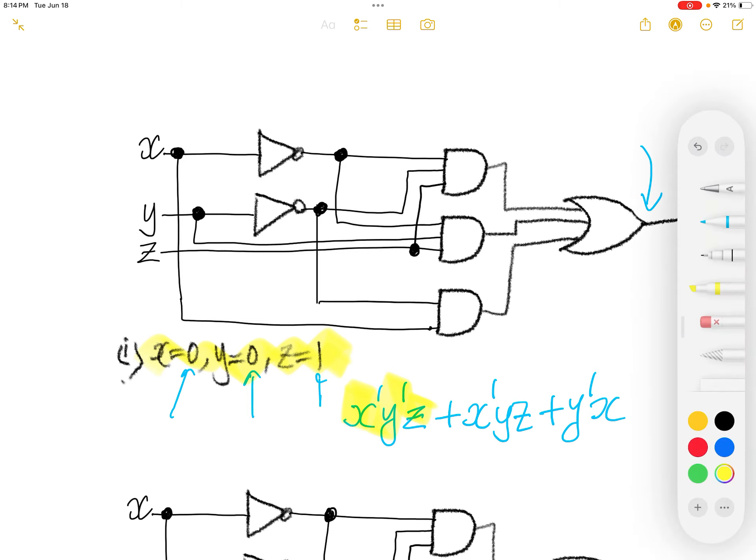And notice that this is an OR gate. OR gate, you only need one of the input to be one. So this here, the input is one. So without looking at the rest, I know that the output here is one.